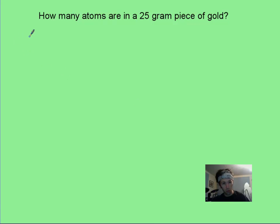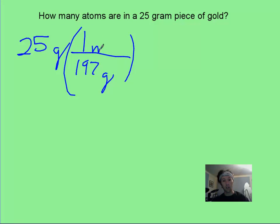Hopefully, you started with your 25 grams, and you looked at the bottom of that picture of gold, and you saw that there was 197 grams in one mole. And so if we do this first, we're going to get about 0.127 moles to start with.